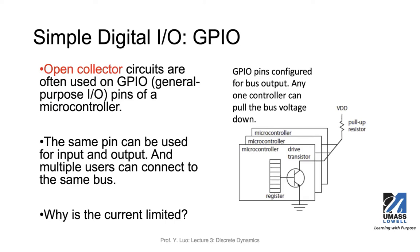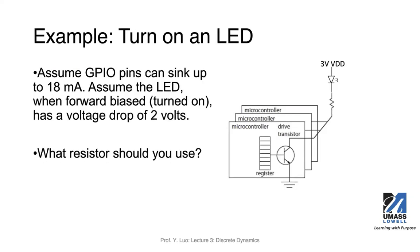Why is the current limited? Because there's an external pull-up resistor — when one of the register bits is written to one, that GPIO pin is pulled down to zero. The pull-up resistor prevents a short circuit when the pin is grounded. For example, if we want to use a GPIO pin to turn on an LED, assume the microcontroller can sink up to 18 milliamps — so the maximum current through that GPIO pin will be 18 milliamps.